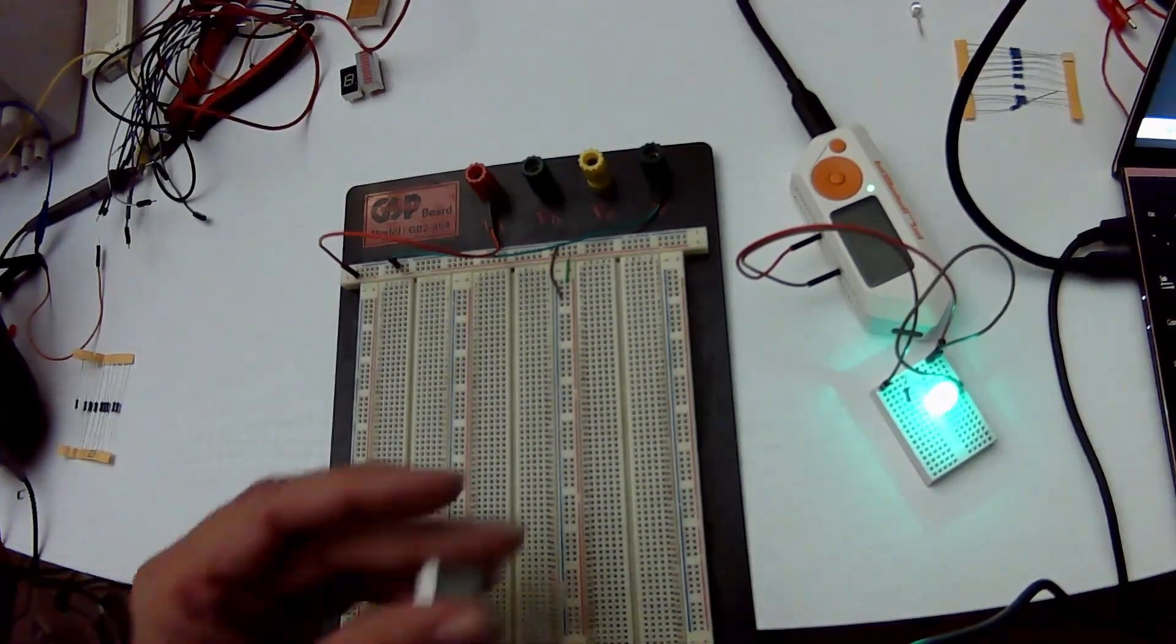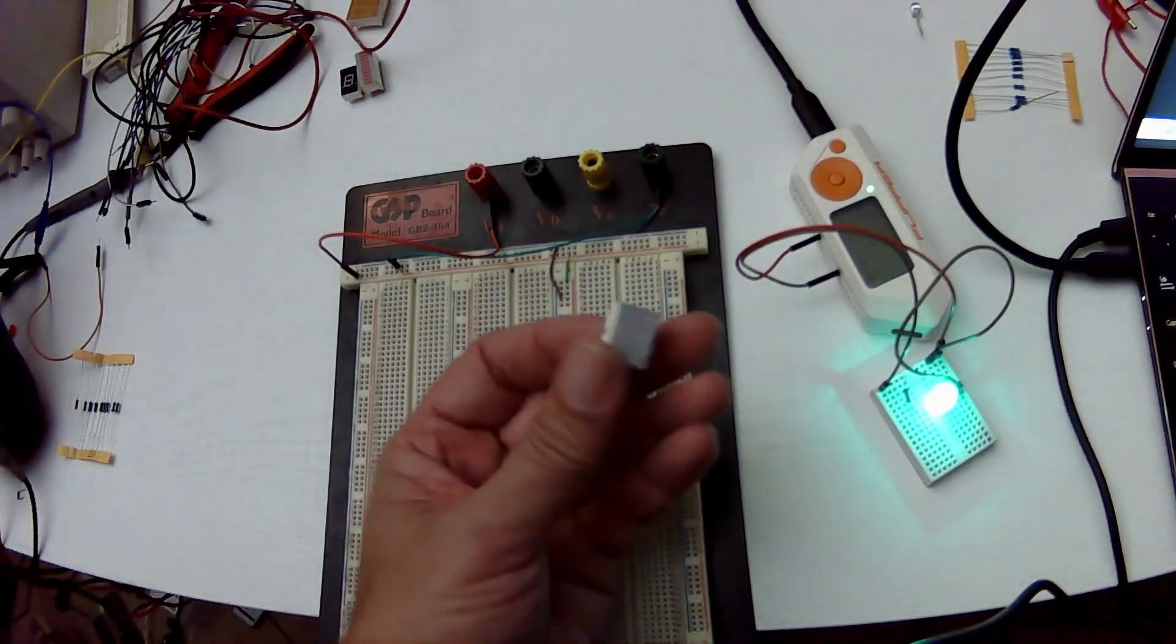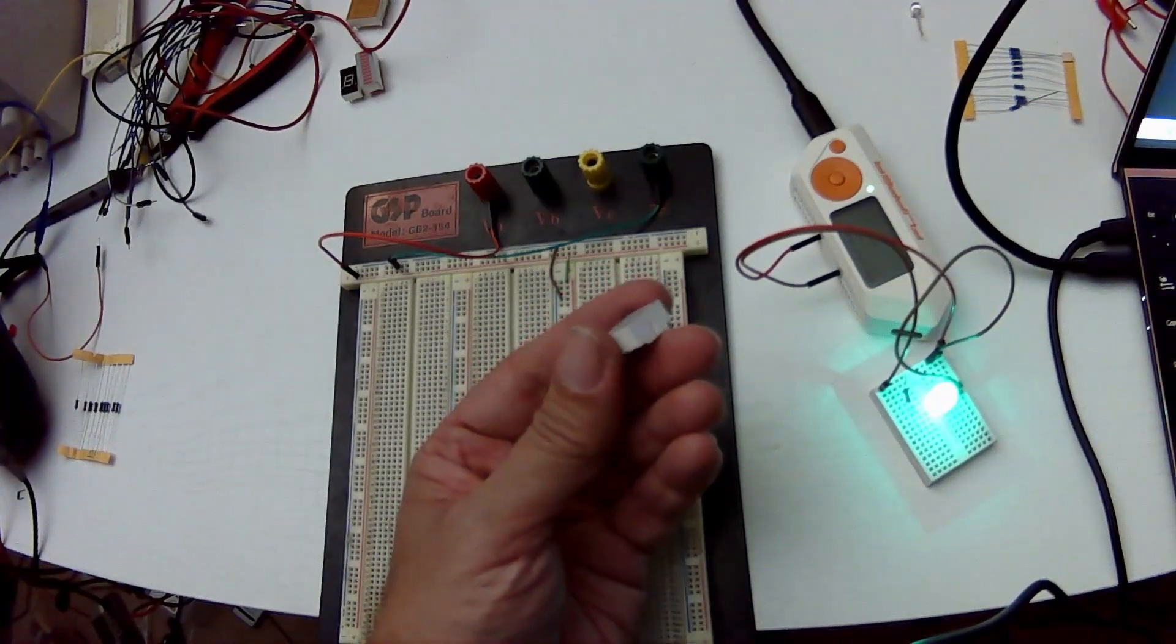Hey everyone. So in this video we're going to look at a seven segment display and we're going to use the flipper's GPIO to power the segments.